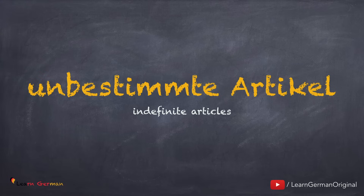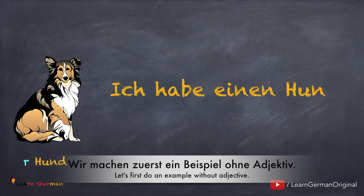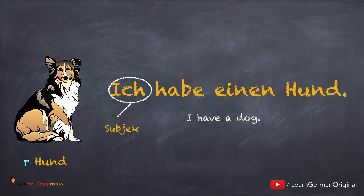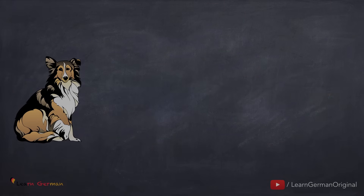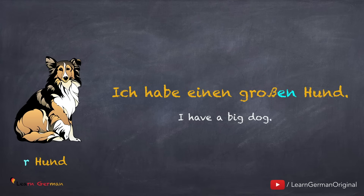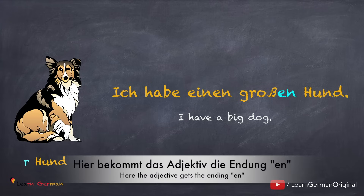Unbestimmte Artikel. Wir machen zuerst ein Beispiel ohne Adjektiv: ich habe einen Hund. In diesem Satz ist ich der Nominativ-Subjekt und einen Hund ist das Akkusativ-Objekt. Weil der Hund maskulin ist, sagen wir im Akkusativ einen Hund. Wenn wir für diesen Hund ein Adjektiv haben, dann sagt man: ich habe einen großen Hund. Hier bekommt das Adjektiv die Endung -en: großen Hund.